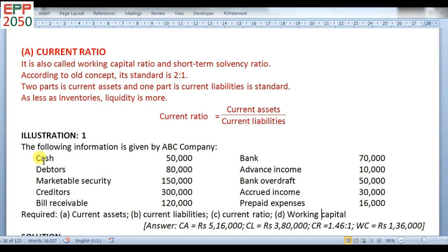Cash — current assets. Debtors — current assets. Marketable security — current assets. Creditors — current liabilities. Bills receivable — current assets. Advance income — current liabilities. Bank overdraft — current liabilities. Accrued income — current assets. Prepaid expenses — current assets.